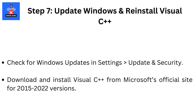Step 7: Update Windows and reinstall Visual C++. Check for Windows Updates in Settings, then Update and Security. Download and install Visual C++ from Microsoft's official site for the 2015–2022 versions.